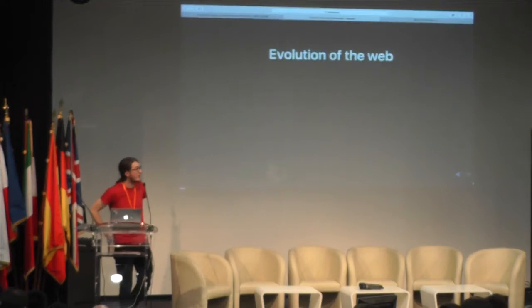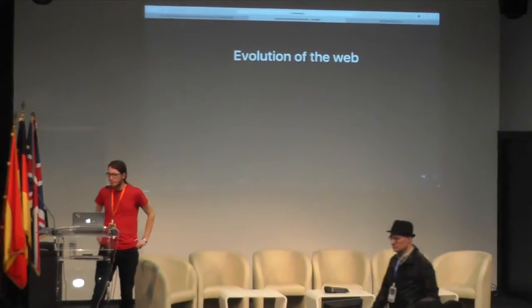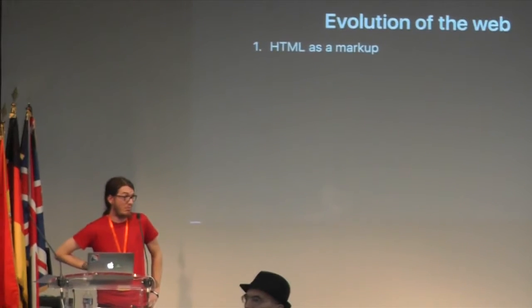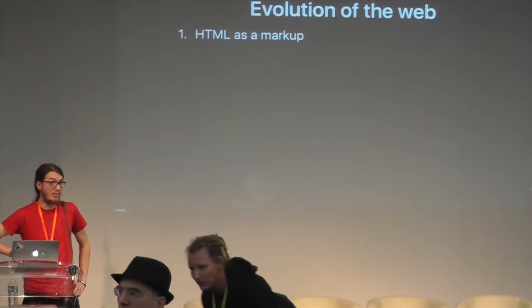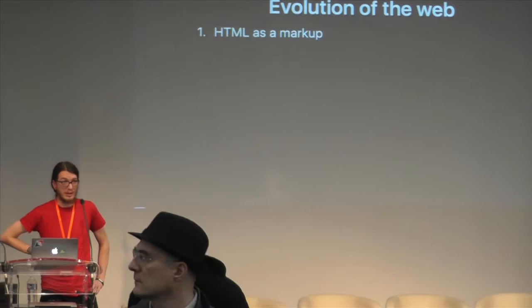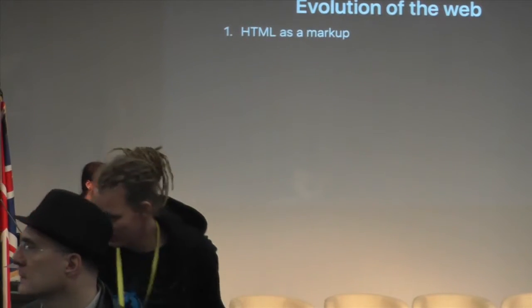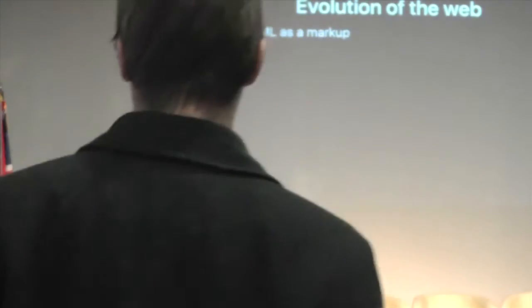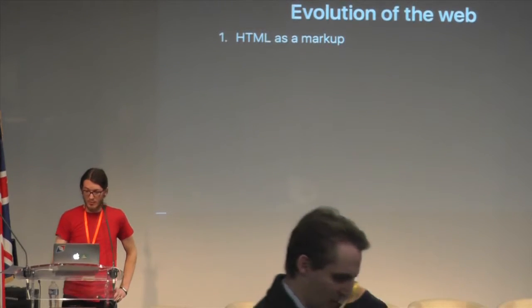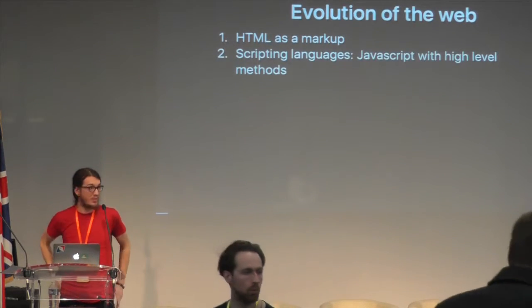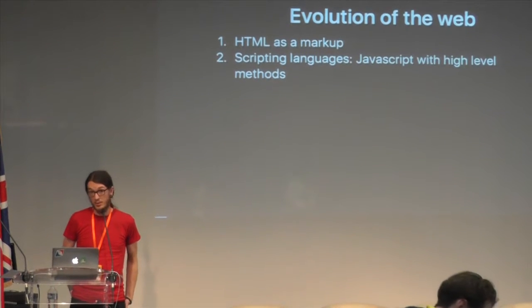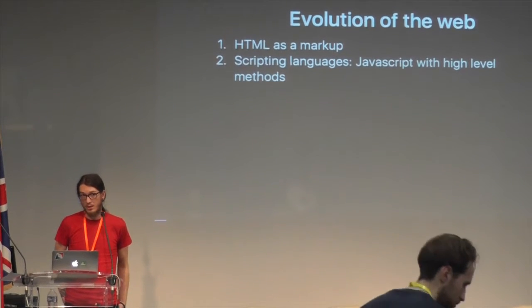First, a little bit of history. The internet and the web started out as HTML. It had links. Links are really amazing — you can do a lot with hyperlinks. It would be awesome. But it was fairly static. And later, scripting languages — we're going to use JavaScript. This really made the web great. It was a major step there.